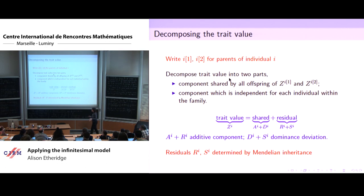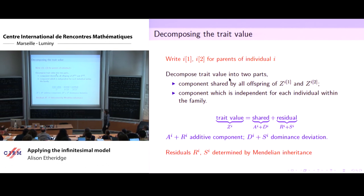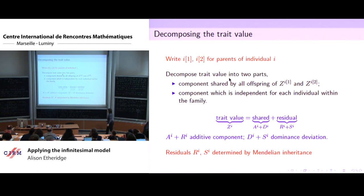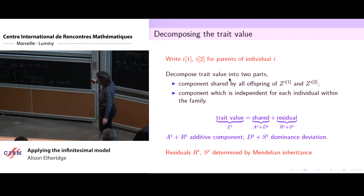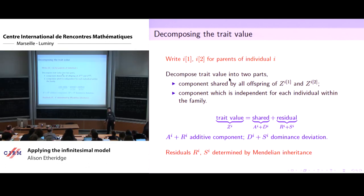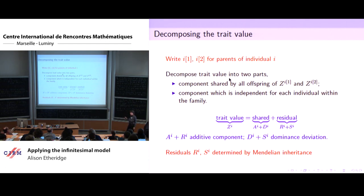The key thing about Amandine's calculation was that she was able to decompose Z into a part shared by everybody — the mean of the parental traits — and a residual. We're going to do the same thing in the case of dominance: decompose trait values in a family into a shared component that everybody in the family has, and residuals capturing the randomness due to Mendelian inheritance. But now this shared component is considerably more complicated, and even conditional on knowing the trait values of the parents, it's going to be random.